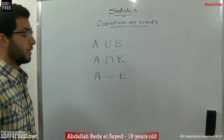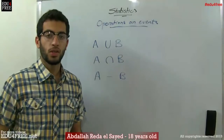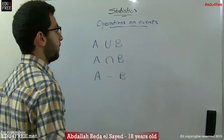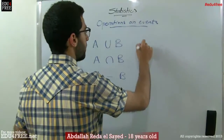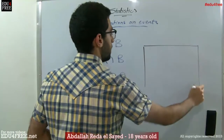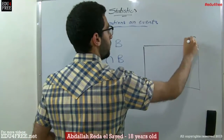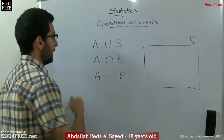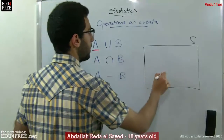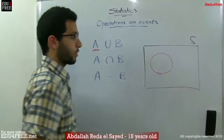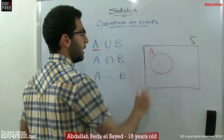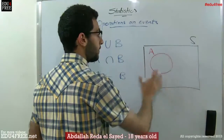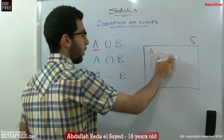Previously we talked about events and we said that events are subsets of the main sample set. For example, if our main sample set is this rectangle, which we refer to as S, then event A is this circle. It's a subset of this bigger set — so it's a part of it.